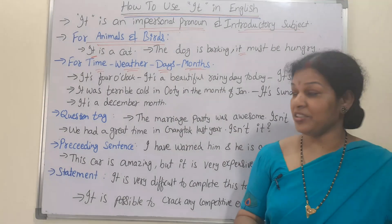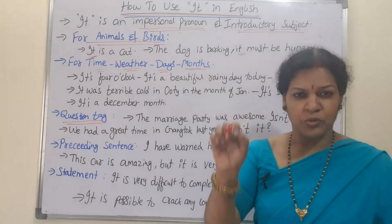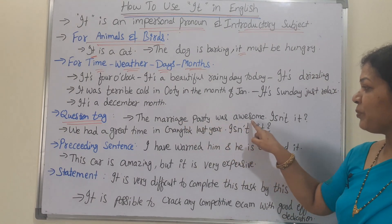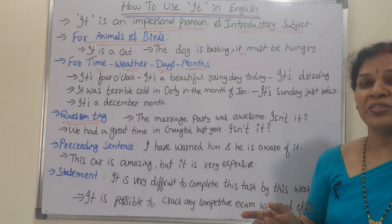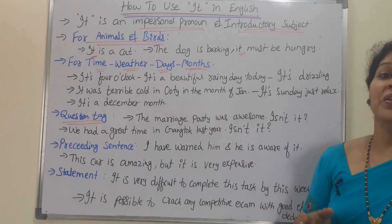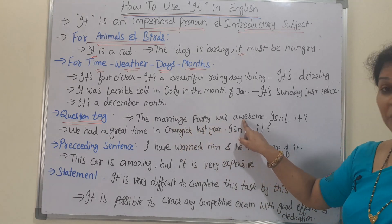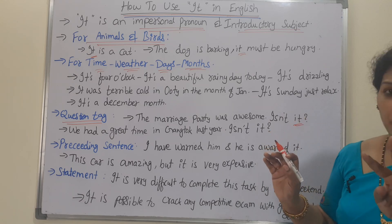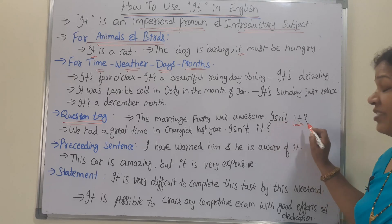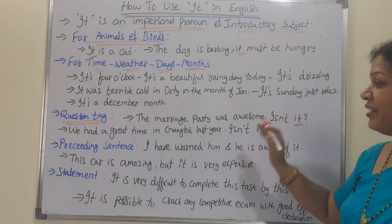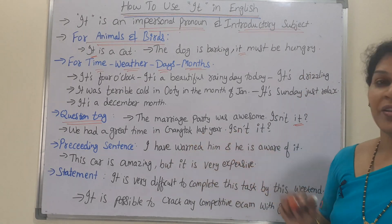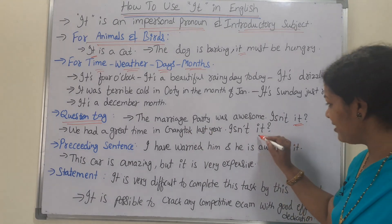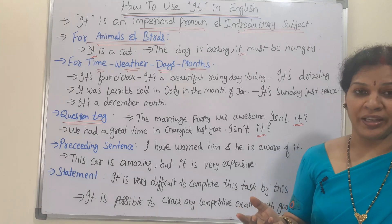Another usage is related to the question tag. To tag a question, we can use IT. For example: The marriage party was awesome — isn't it? The annual day was awesome — isn't it? IT comes at the end of the phrase. Another: We had a great time in Gangtok last year — isn't it? So to put any question tag, we can use IT.